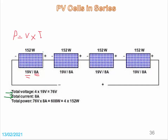The total power is the sum of the power of all four panels: 4 multiplied by 152 equals 608 watts. We can verify this as total voltage multiplied by total current: 76 volts multiplied by 8 amperes also equals 608 watts.